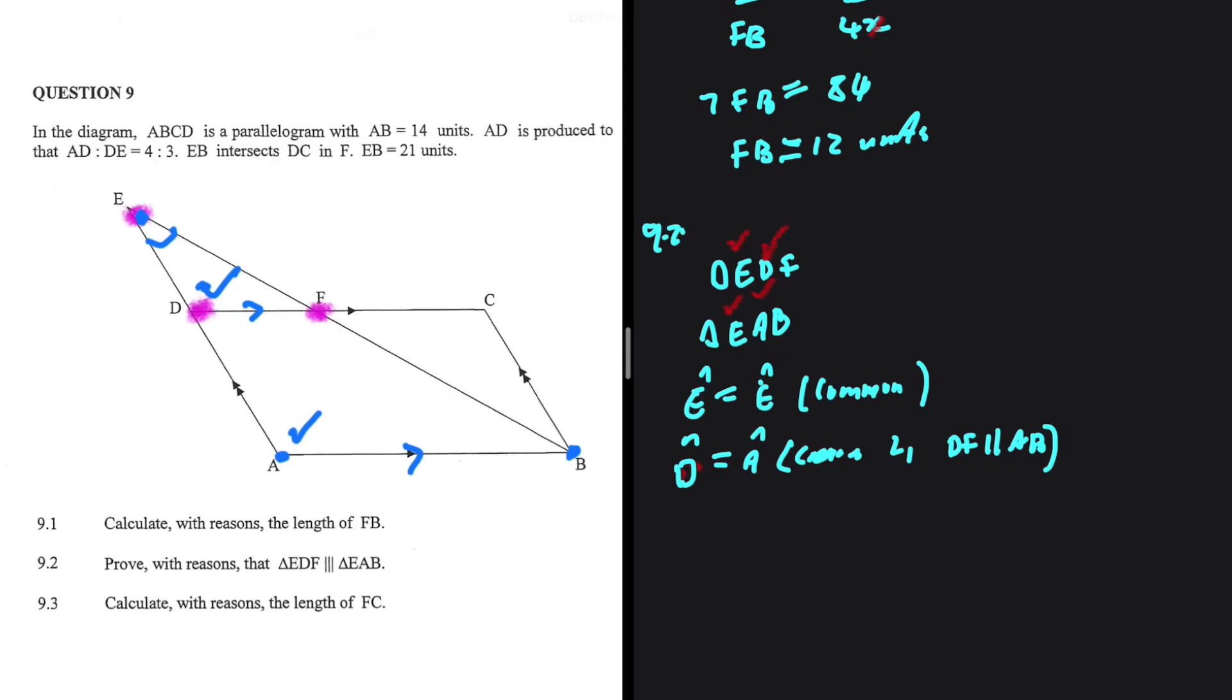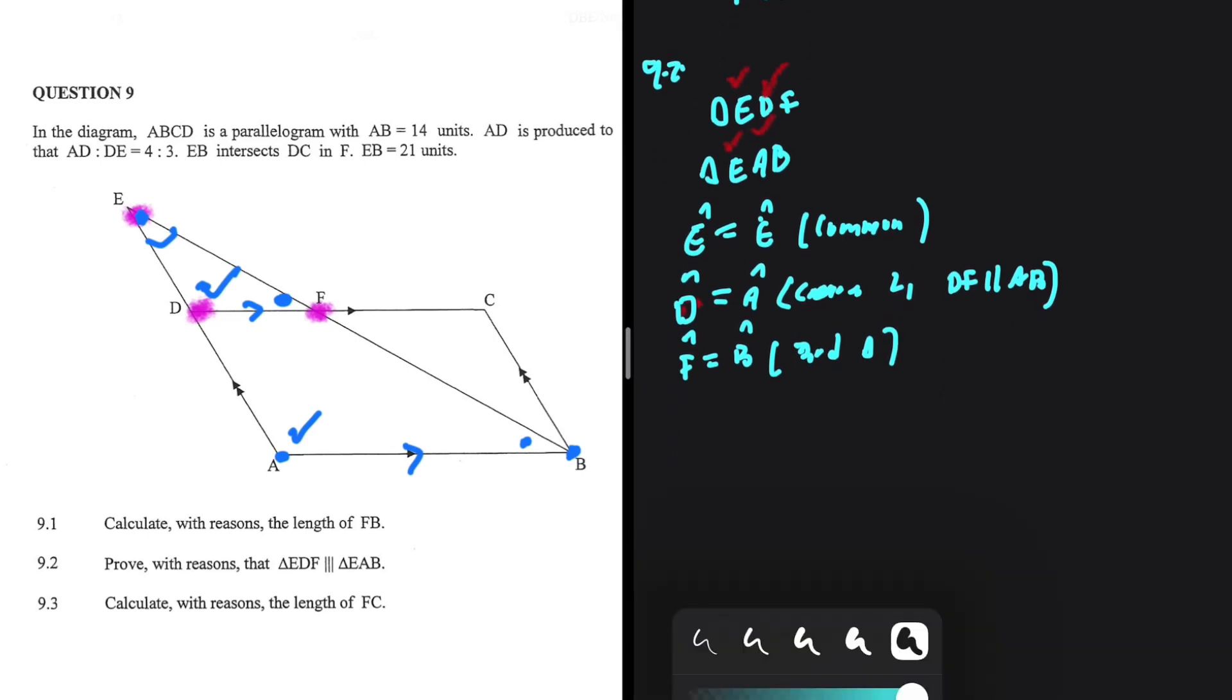So this angle F should be equals to angle B. So we have F being equals to B. We can use third angle of triangle or we can also use corresponding angles.